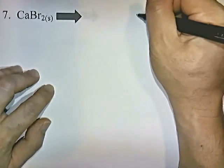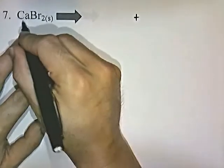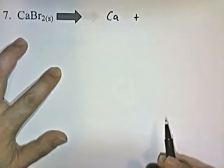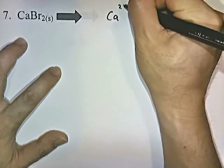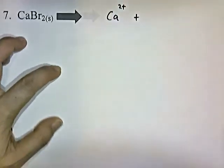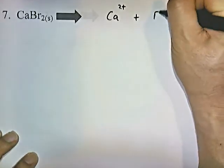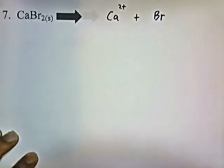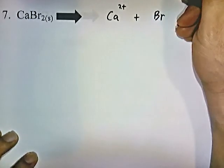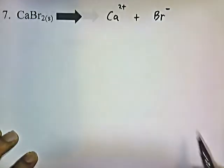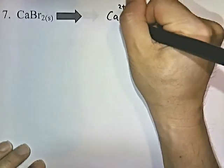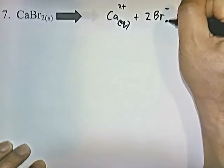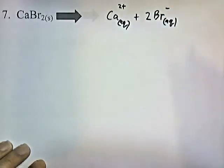Calcium bromide: Ca is a group 2A element, so group 2A elements have an oxidation state of plus 2. Bromine Br is a halogen — group 7A or group 17 — those have a negative 1 charge. There are 2 bromines, so we swing the 2 in front of the Br. That is how calcium bromide dissolves in water.